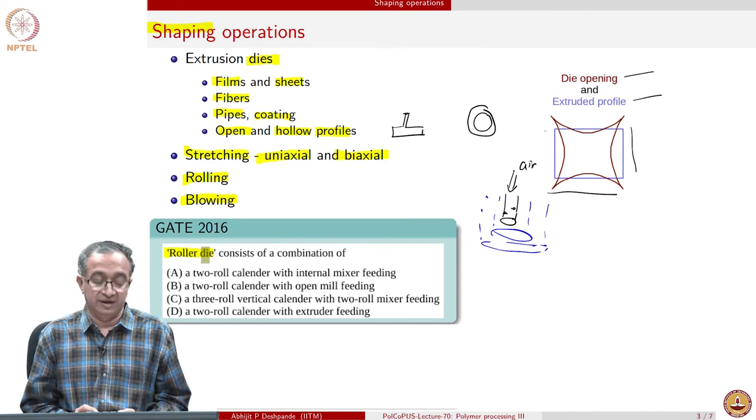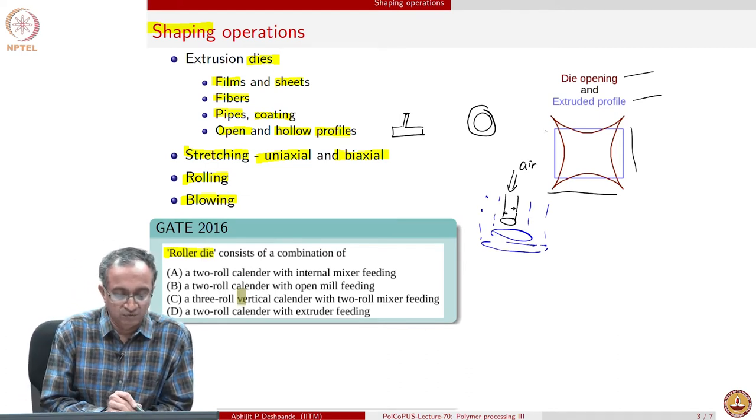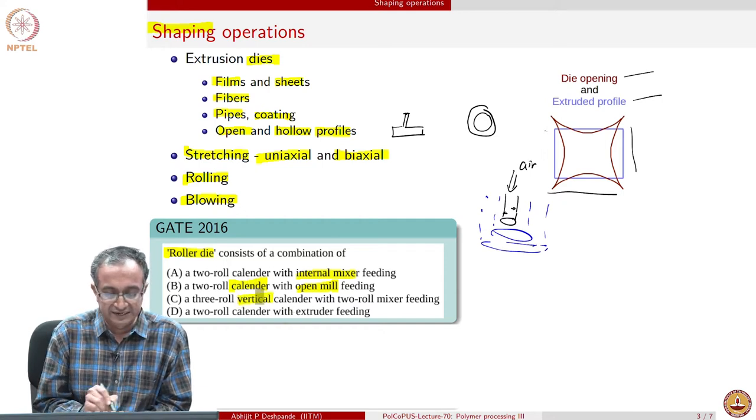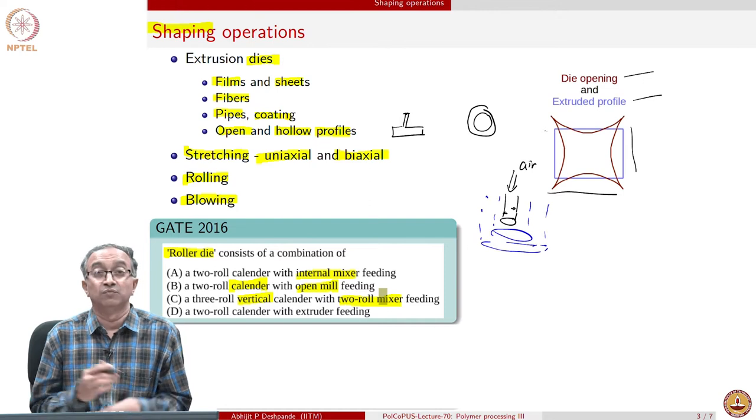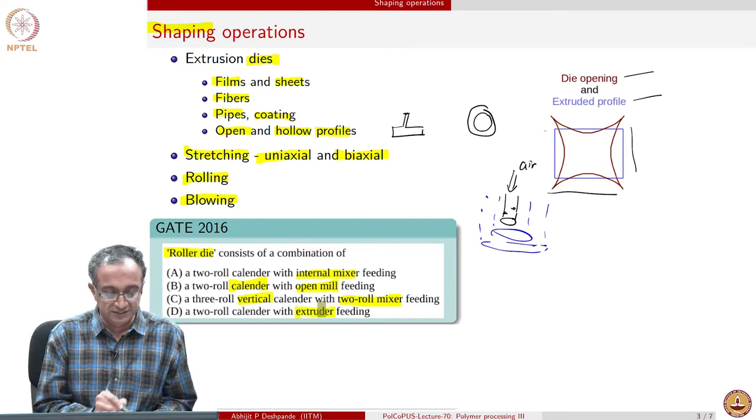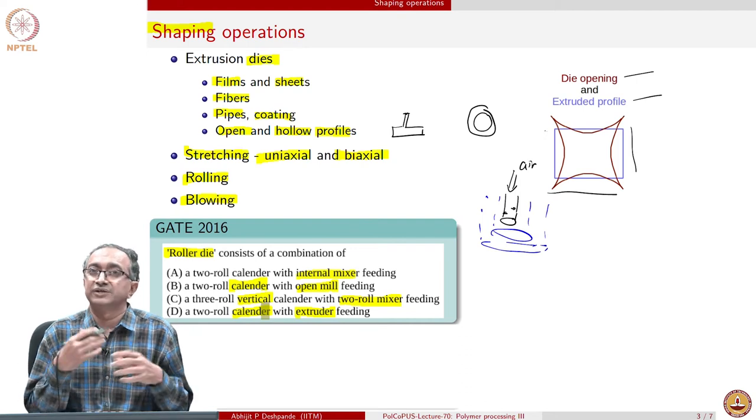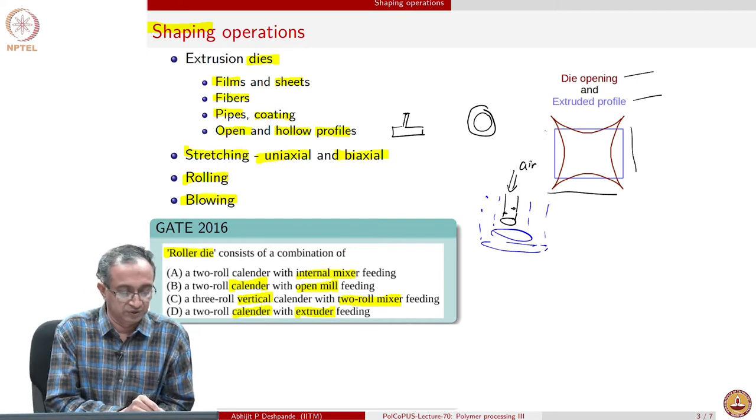You can try to look through and analyze what is it a combination of. Is there an internal mixer involved? Is there an open mill? Is it a calendar? Is there a vertical calendar with mixer? What is it or whether it is just an extruder feeding with a two roll calendar? Try doing some search and you can I am sure arrive at the answer.